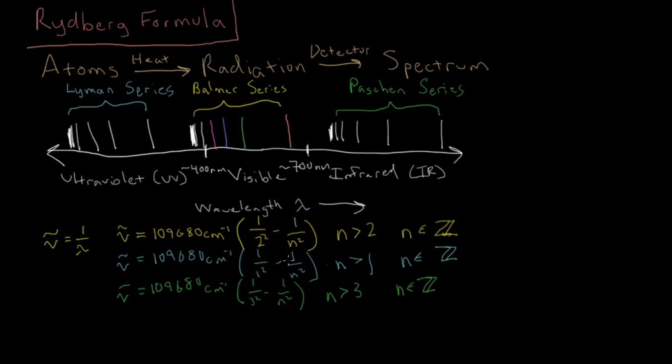So by now you might be detecting a pattern with all these various line series, and indeed, there are more and more series as you go farther and farther to the right, to larger and larger wavelengths, where this first number here equals four and then five, etc.